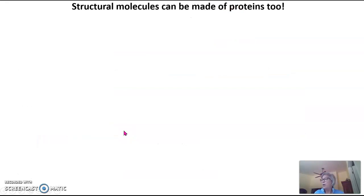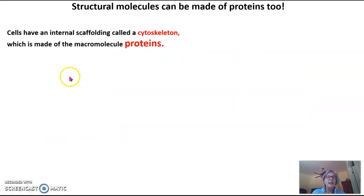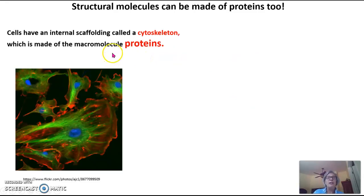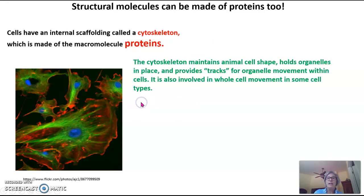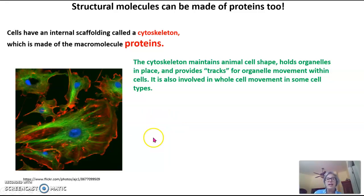Structural molecules can be made out of proteins too. Cells have an internal scaffolding called a cytoskeleton, and it's made of the macromolecule proteins. Much like our bodies have a skeleton to help us maintain shape, cells have an internal cytoskeleton that helps maintain cell shape and holds organelles in place. It can also provide tracks for organelle movement within the cell, and in some cell types, these cytoskeletal structures are also involved in whole cell movement.